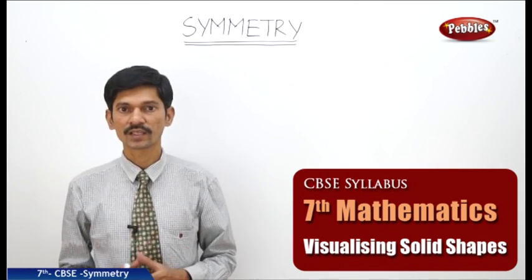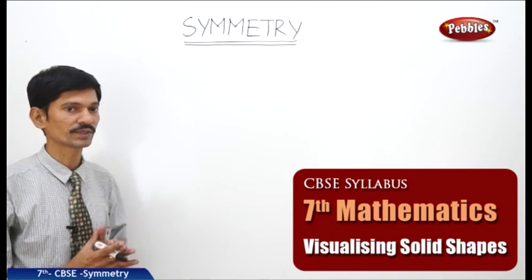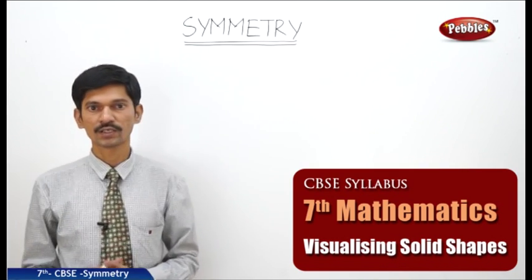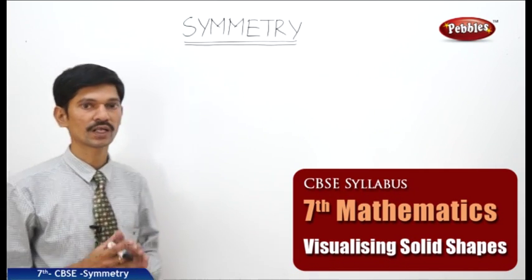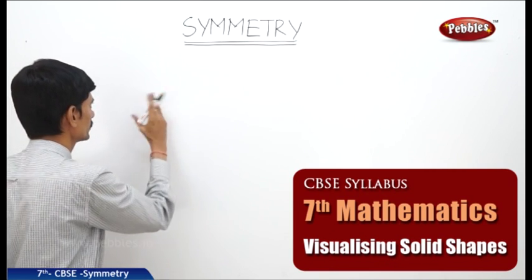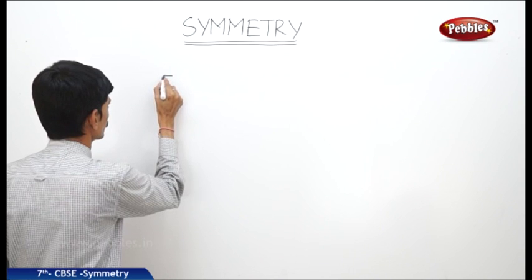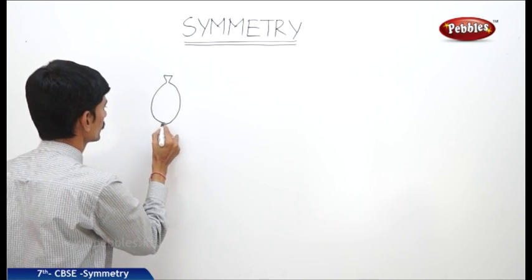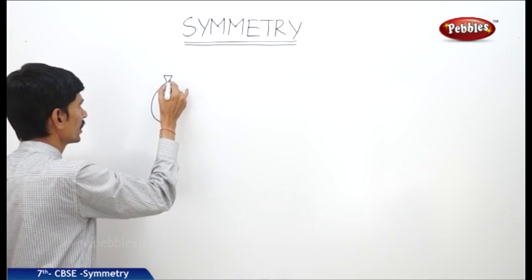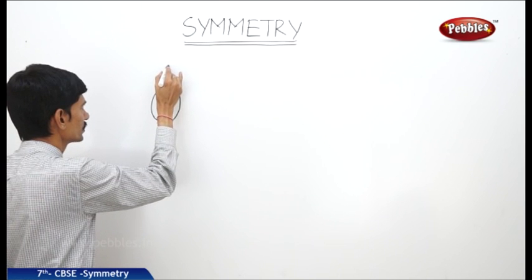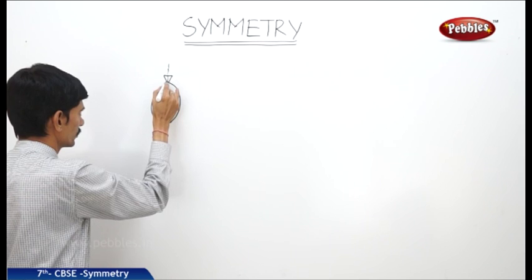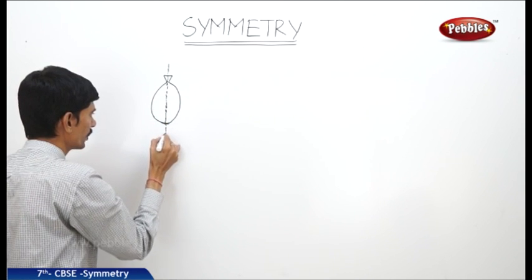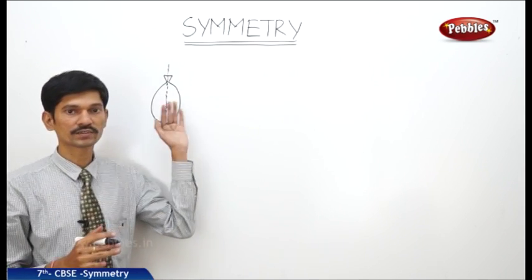Now, what is symmetry and what are the types of symmetry? You already know about line symmetry. The two main important types of symmetry are line symmetry and rotational symmetry. When is a figure said to have line symmetry? If you draw a line in the figure and fold the figure about this line, and if the two parts of the figure coincide with each other, then the figure is said to have line symmetry.